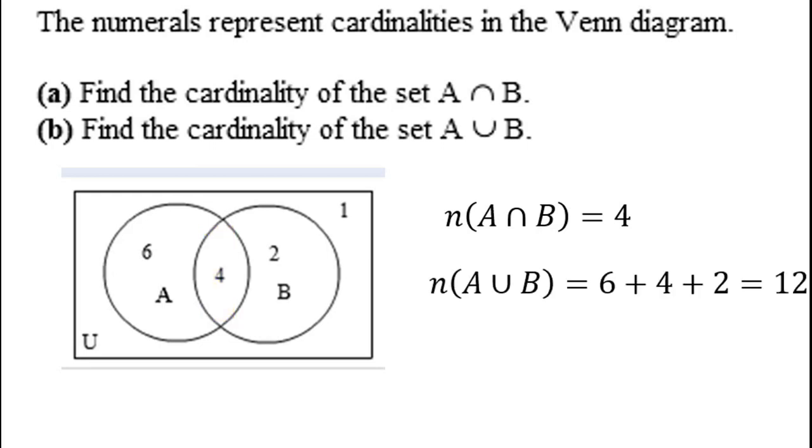In part B, we need the union. The number of elements in the union of A and B means any of the elements in any of the regions that are in A or B or both. So that would mean that we need the region that has 6, the region that has 4, and the region that has 2. 6 plus 4 plus 2 is 12. So the total number of elements, or cardinality, of A union B is 12.